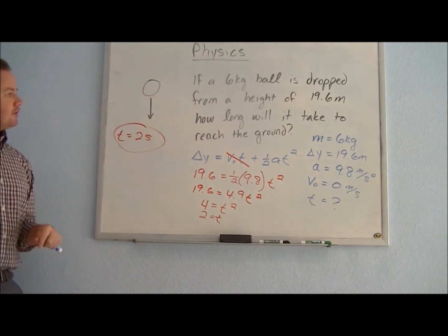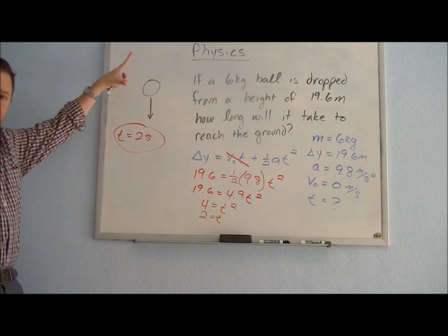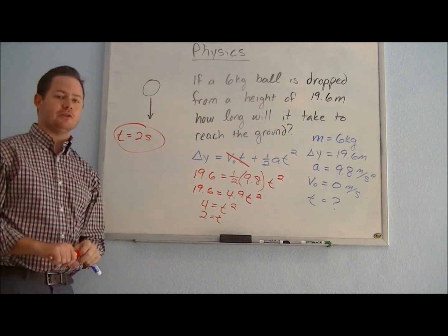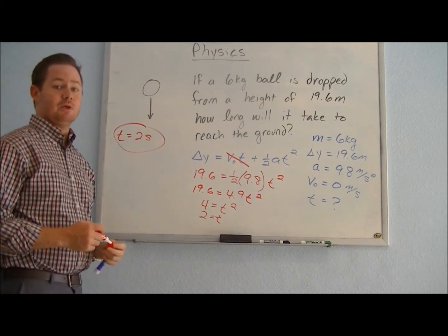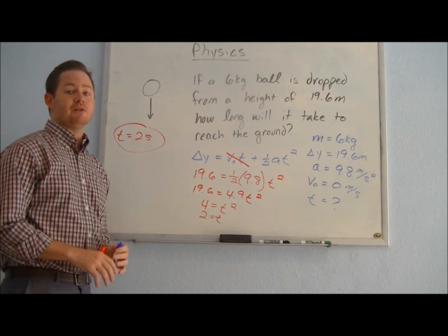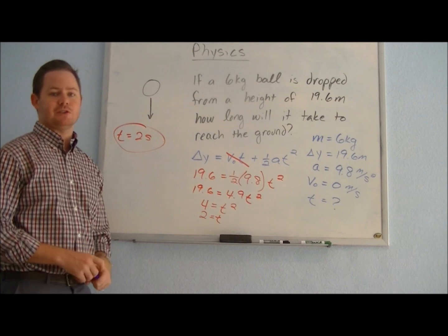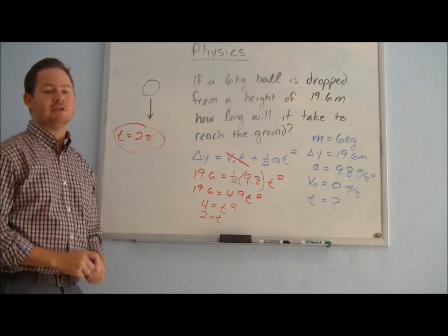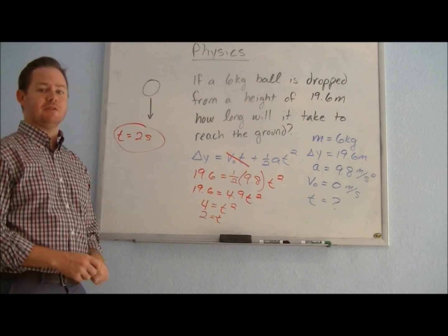So for a ball that is 19.6 meters off the ground, if we let go of it and let it fall to the ground, then the amount of time that it will take that ball to reach the ground is 2 seconds. If you'd like to do some more practice, take a look at some of our other physics videos, or you can visit our website at sandersontestprep.com. Thanks for watching.